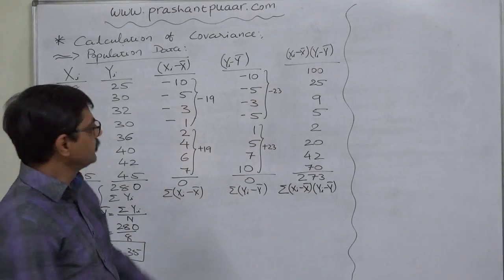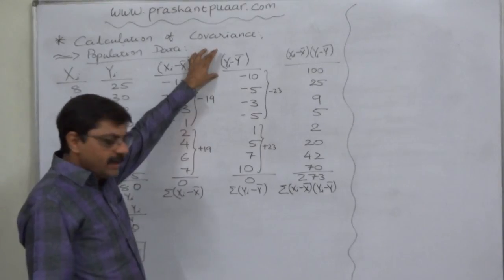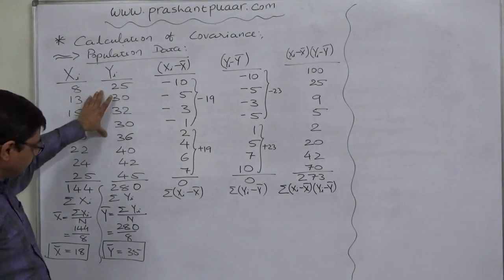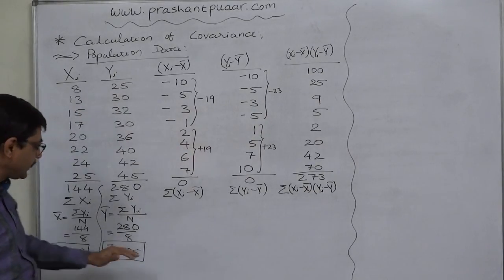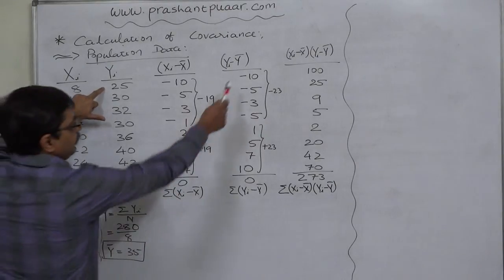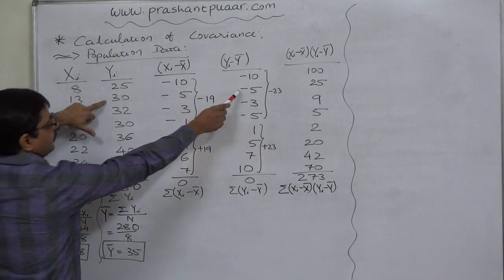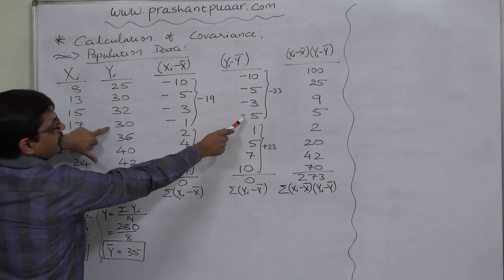In the same way, now we have to find out the deviations from mean for the variable y. The population value of y are this and from each and every value, we need to subtract y bar that is 35. 25 minus 35 minus 10, 30 minus 35 minus 5, 32 minus 35 minus 3, 30 minus 35 minus 5,